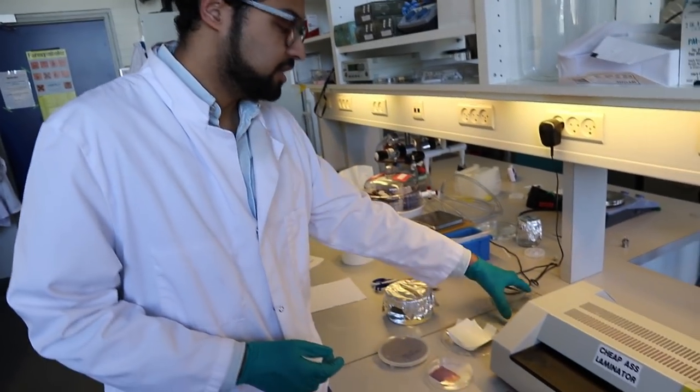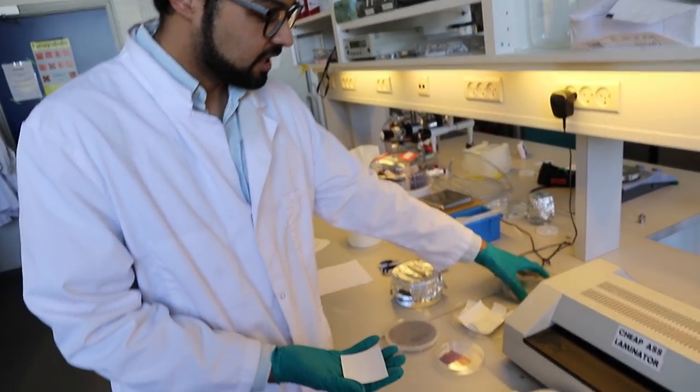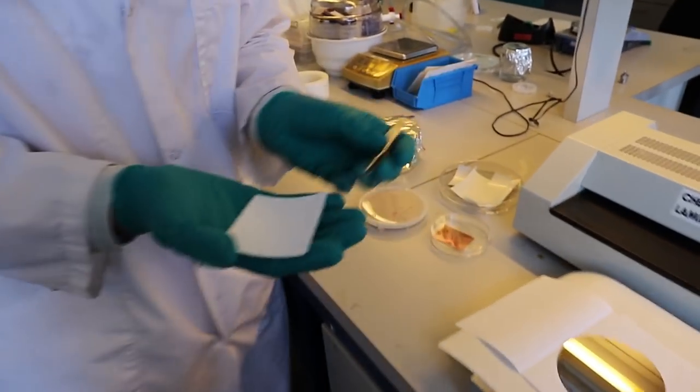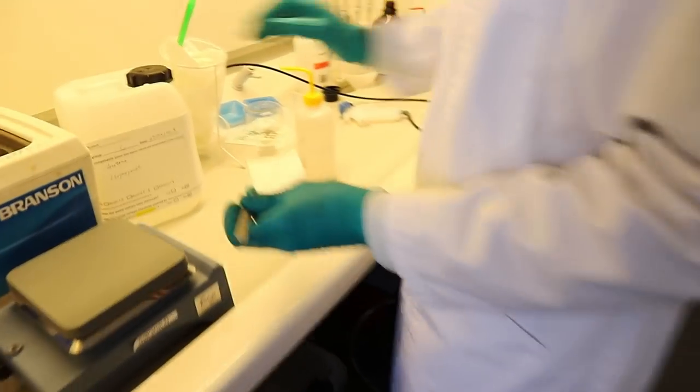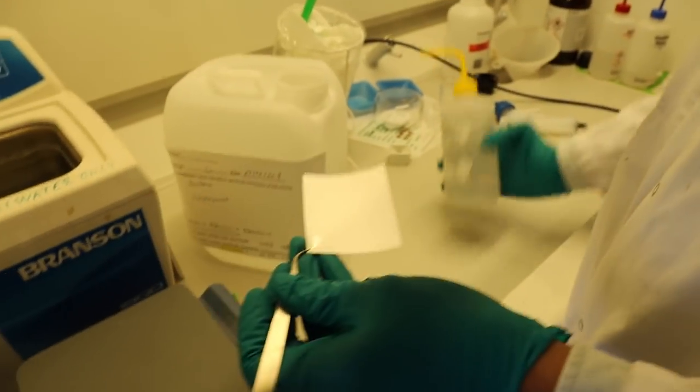Before we get started, we need to clean the PVA foil. So what I do is I basically take one of our foils and go over to the fume hood and clean it with isopropanol.